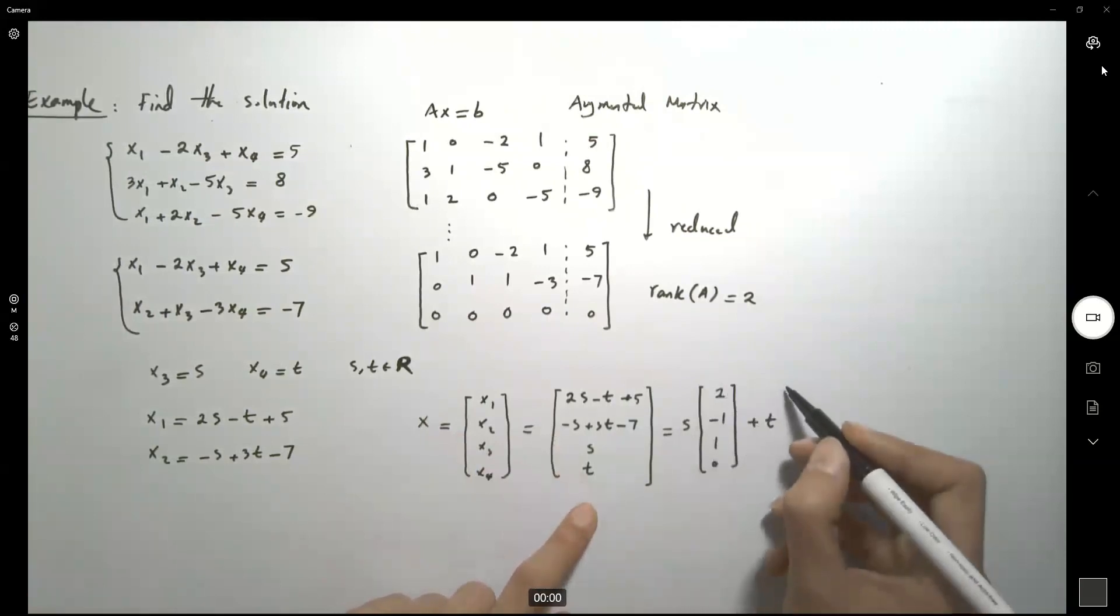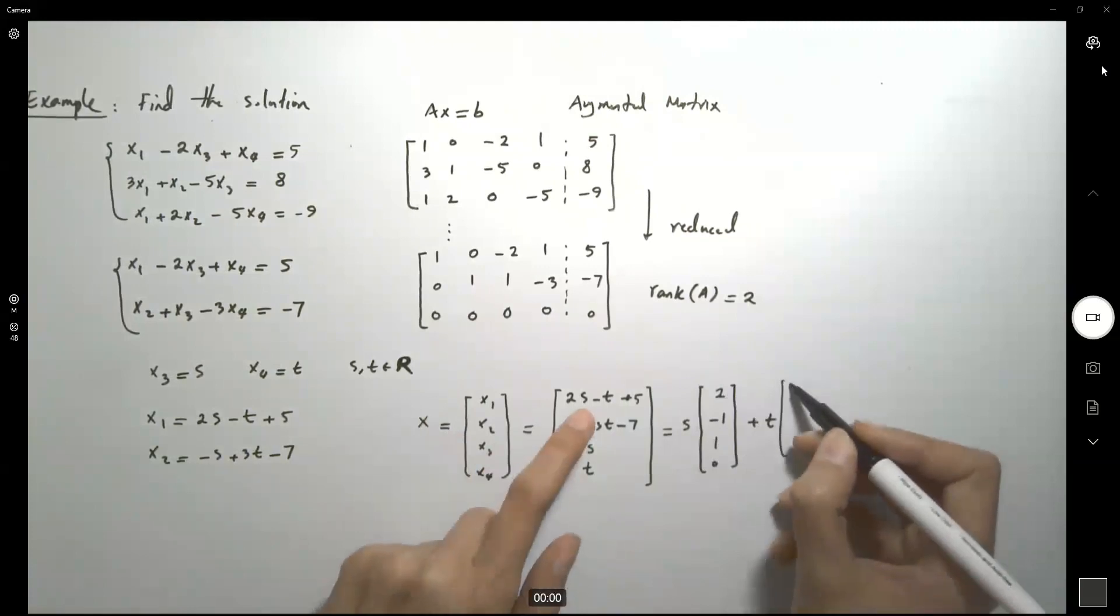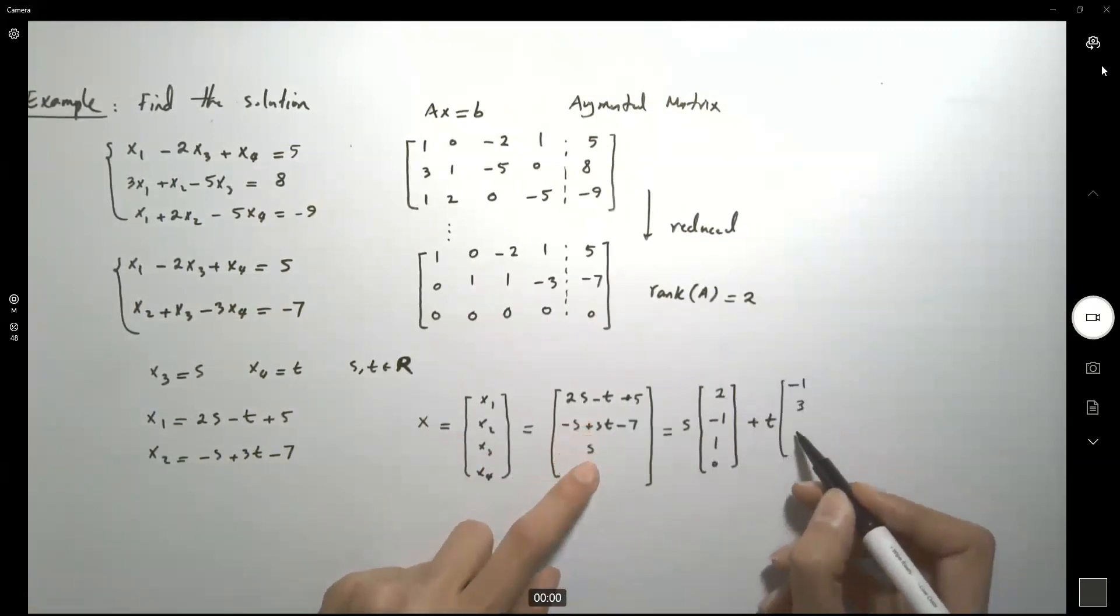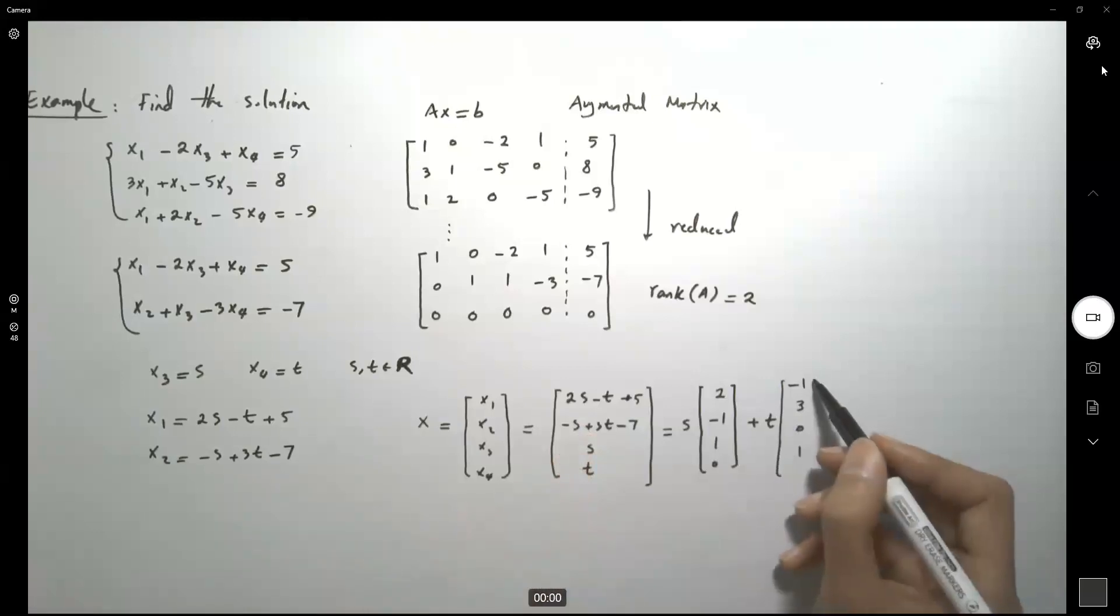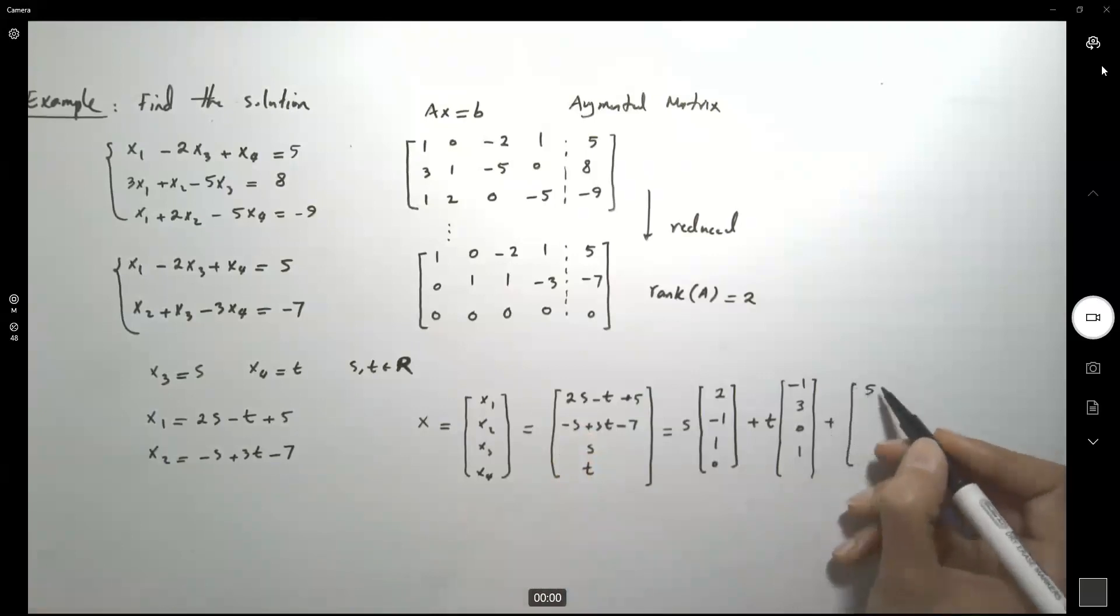Plus t, which is another scalar for you, multiplied by negative 1, 3, 0 and 1, plus the last column, which is 5, just a constant, negative 7, 0 and 0.